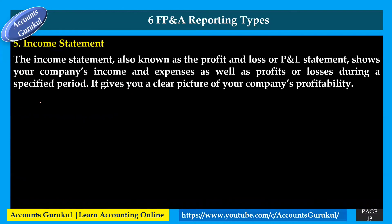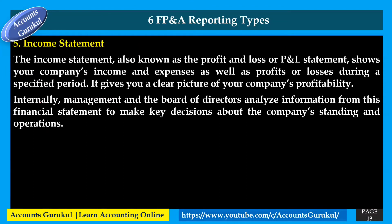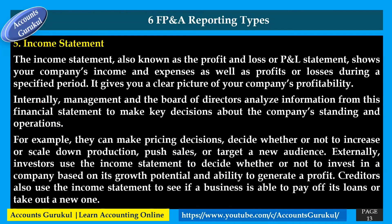The fifth report type is the income statement, also known as the profit and loss (P&L) statement. It shows your company's income, expenses, and profits or losses during a specified period, giving a clear picture of profitability. Internally, management and the board of directors use this statement to make key decisions about pricing, production scaling, sales targeting, or reaching a new audience. Externally, investors use it to decide whether to invest based on growth potential, and creditors use it to assess the business's ability to repay loans.